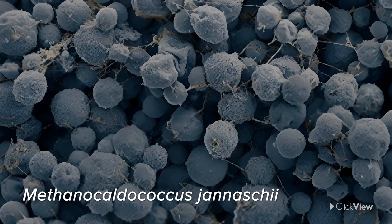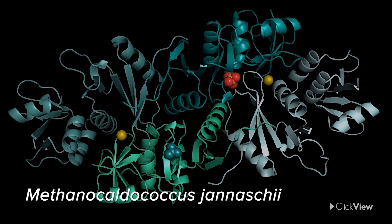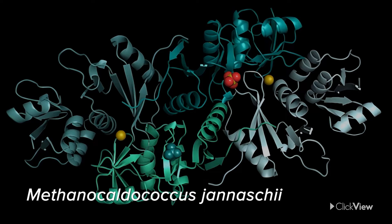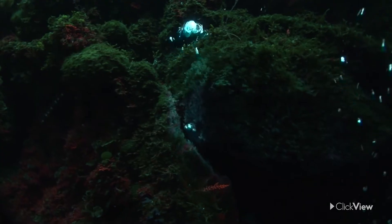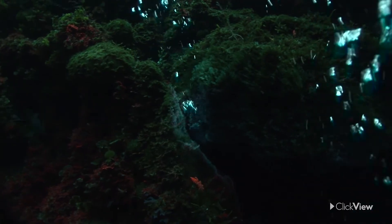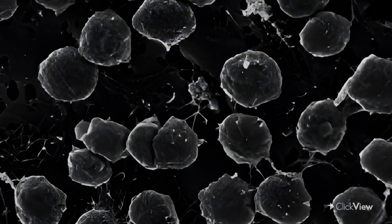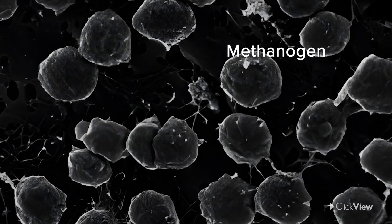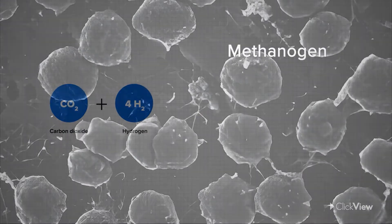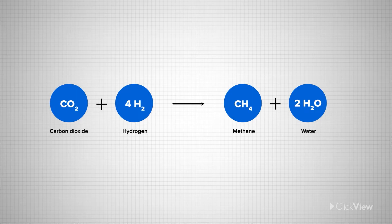Our understanding of Archaea increased dramatically in the 1990s, when scientists decoded the full DNA sequence of a type of Archaea called Methanocaldococcus jannaschii. This species thrives at temperatures of 185 degrees Fahrenheit and produces methane from carbon dioxide. It is a methanogen — one of three broad physiological groups of Archaea. Methanogens get their energy by converting carbon dioxide and hydrogen into methane in water.